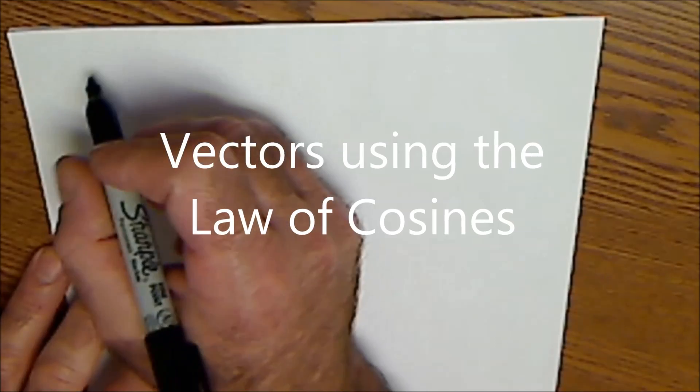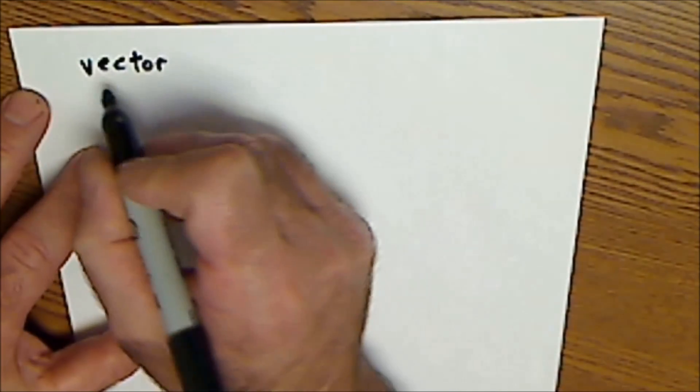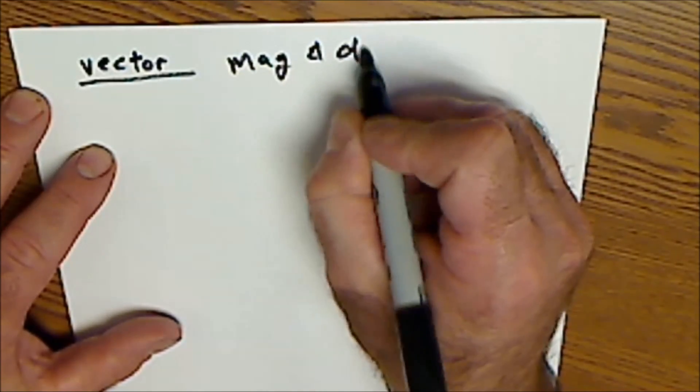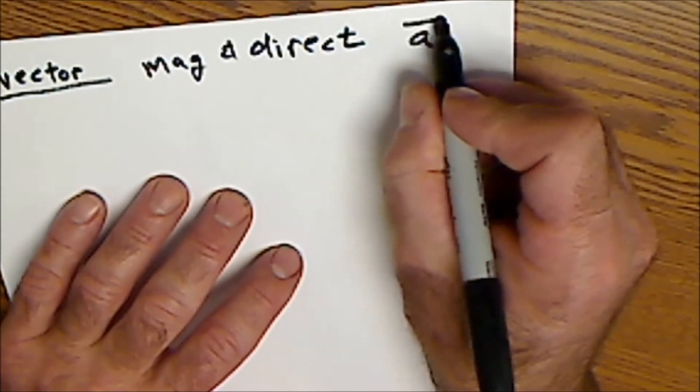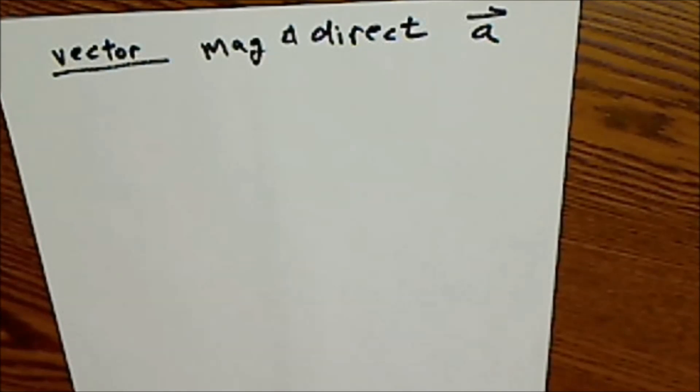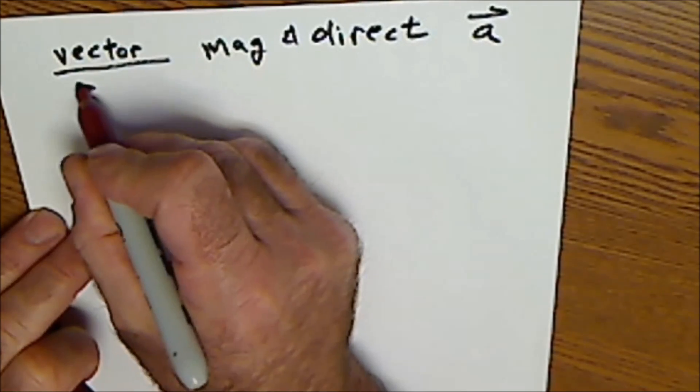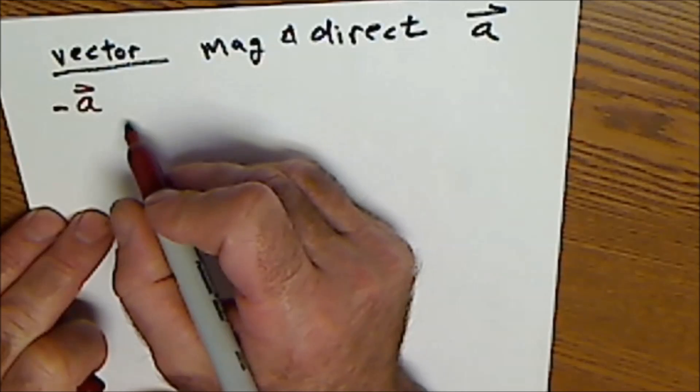So, a quick overview of vectors. A vector has both magnitude and direction, usually represented with a lowercase letter and an arrow over it. A vector opposite vector A, so a negative vector is the same as vector A but in the opposite direction.